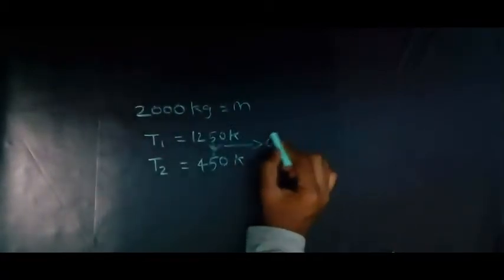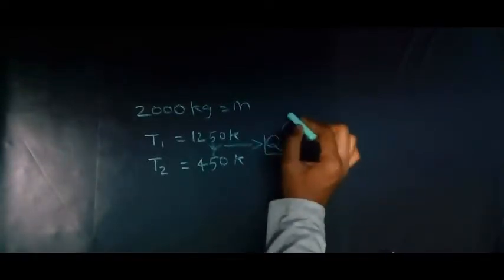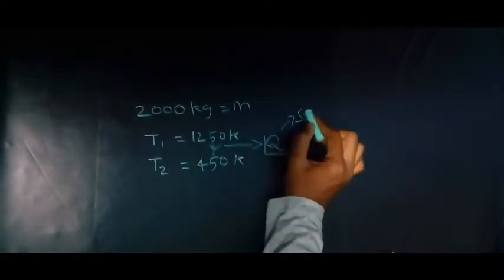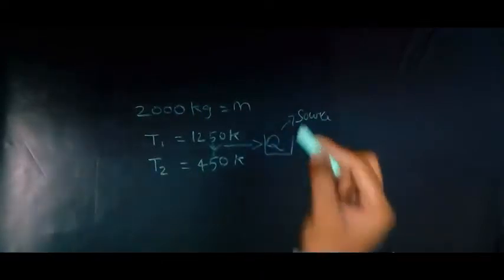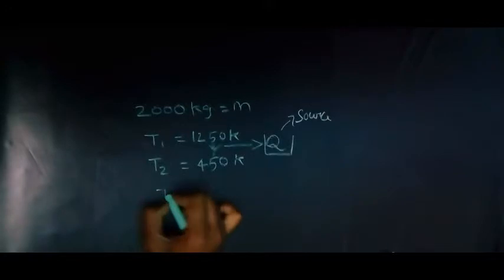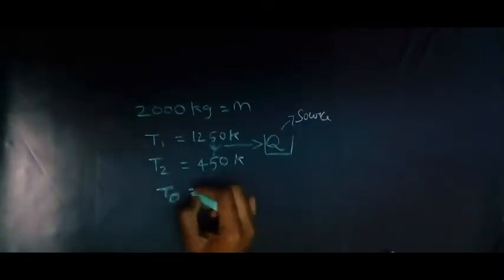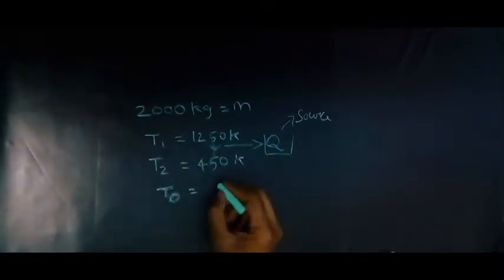They are using it as a source of energy. The ambient temperature, let me write it here—the ambient temperature, the symbol is T naught. I am using this symbol specifically because I have given all the formulas in my previous video using these symbols only.